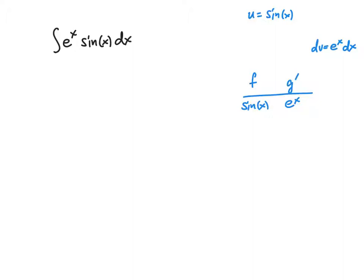So we get to choose: do we want u to be e to the x, or do we want u to be sin of x? In other words, do we want to differentiate e to the x or do we want to differentiate sin of x? In this example, I choose to differentiate sin of x. You'll get the same exact answer at the end if you go the other way and differentiate e to the x and choose to integrate sin of x in integration by parts. So let's proceed. I'm going to differentiate sin of x and I'm going to anti-differentiate e to the x. And if I set up a tabular method, it'll look like this table here.